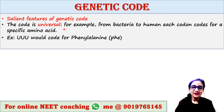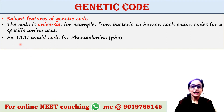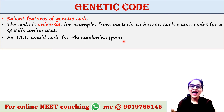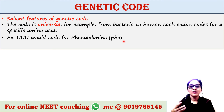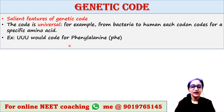Next, the code is universal. That means from bacteria to humans, each codon codes for a specific amino acid. For example, UUU codes for phenylalanine — in the human body, in the bacterial cell, or in the cell of any other animal or virus. So the codon will always code for a specific amino acid.